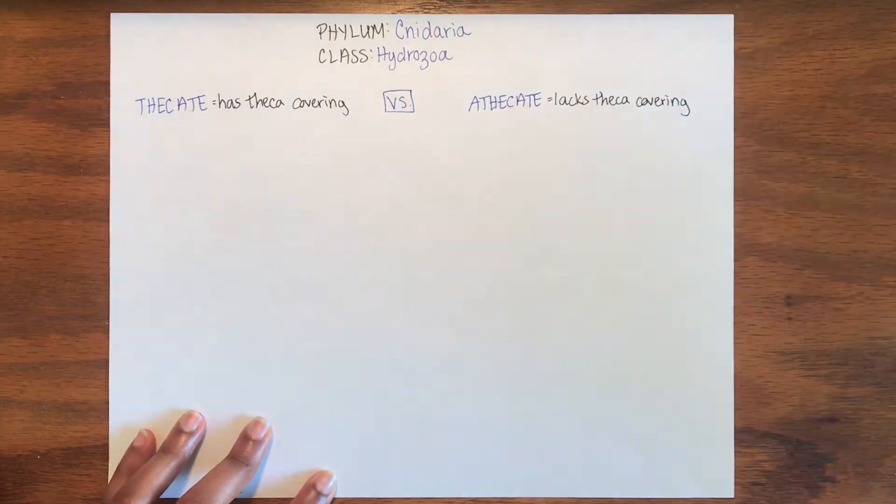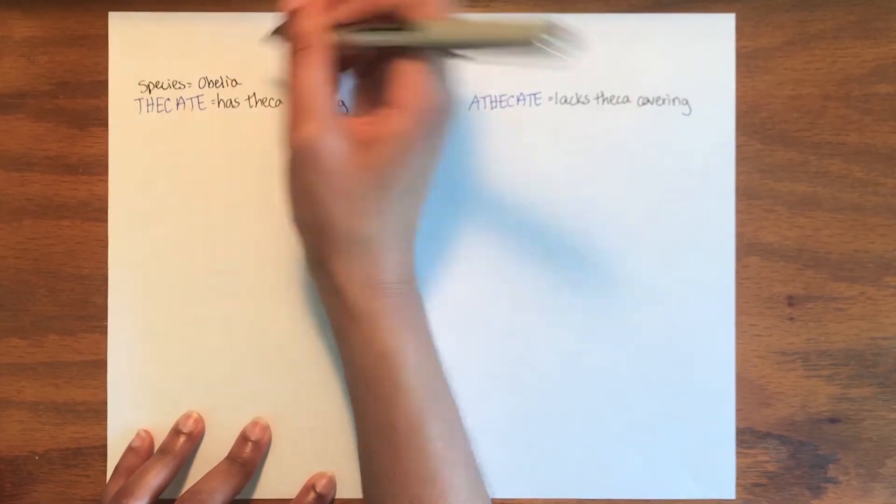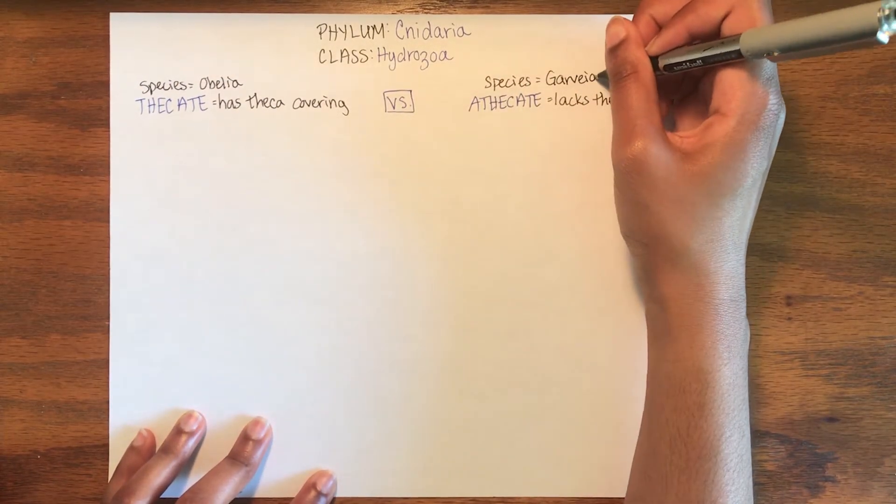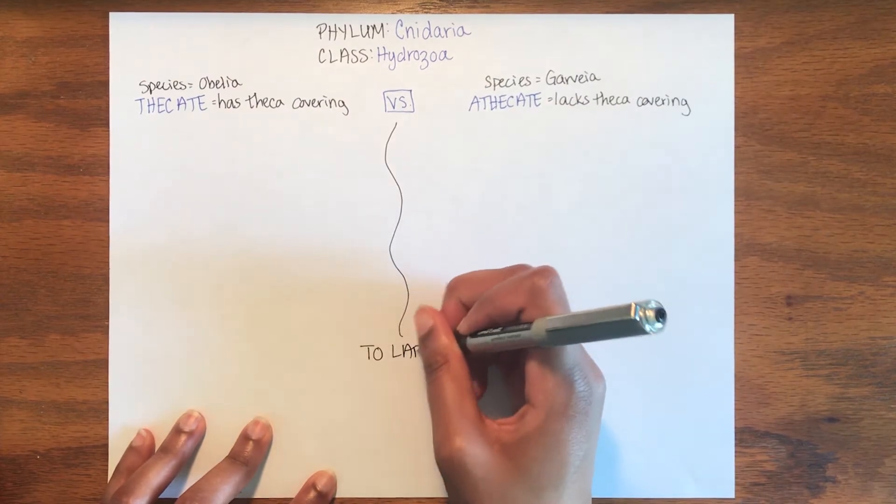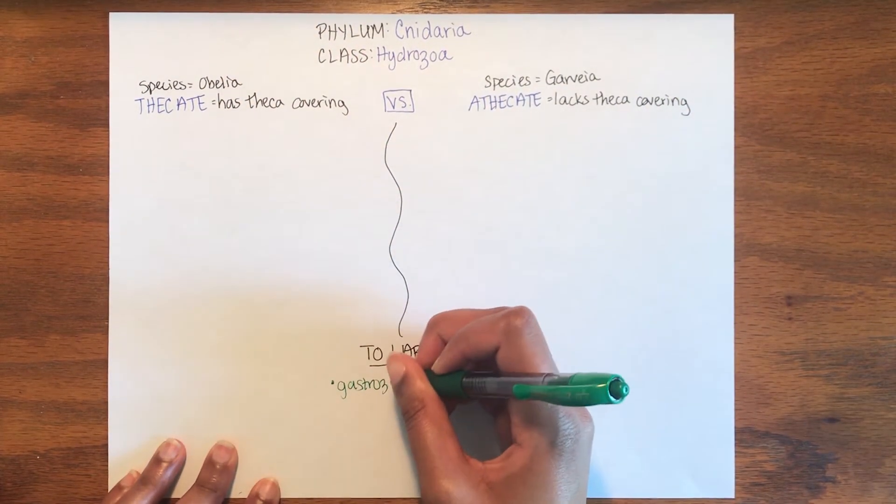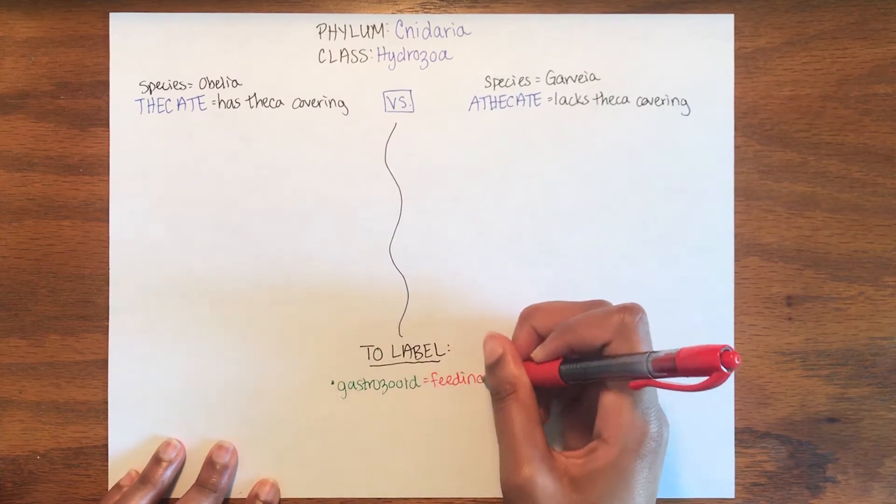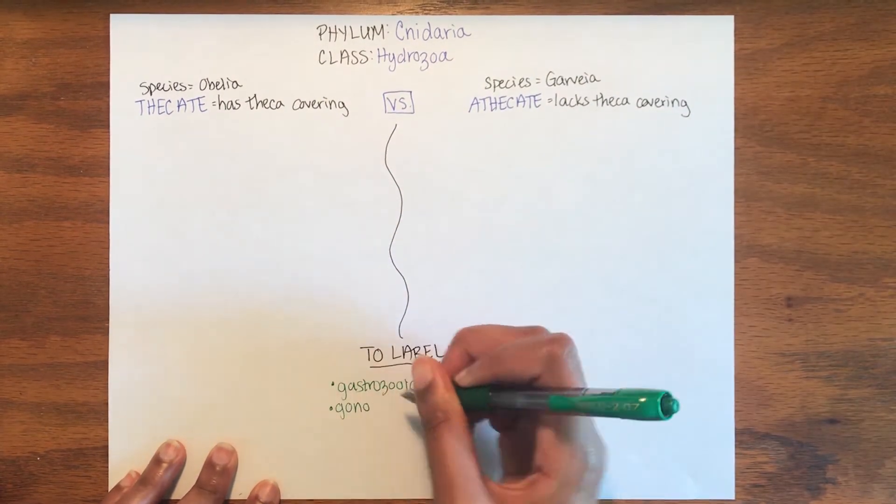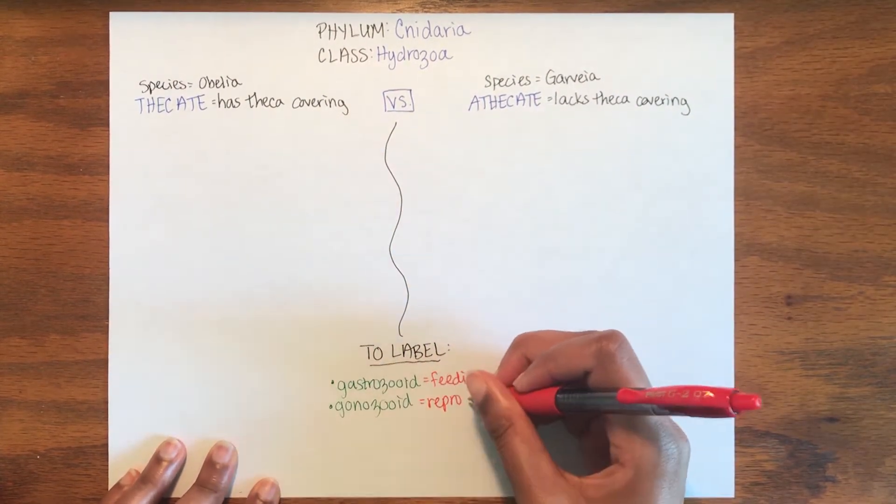We are going to be basing these drawings on two species, Obelia and Garvea. The features both hydroids have in common are the gastrozoid, which functions as the feeding zooid, the gonozoid, mouth, and tentacles.